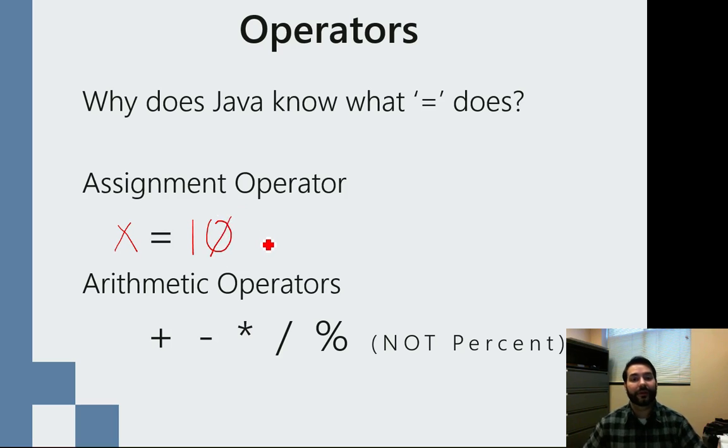Now I can do other things with that, and that's where I can start to see my arithmetic operators, the plus sign, the minus sign. Why are those so important? Why do we know that the crosshair means addition? Why do we know that the dash means subtraction? Why do we know that the asterisk means multiplication?